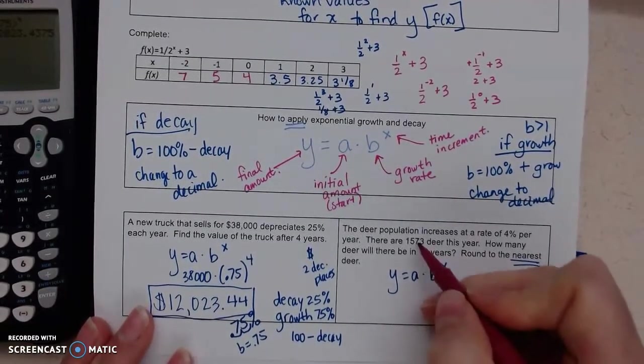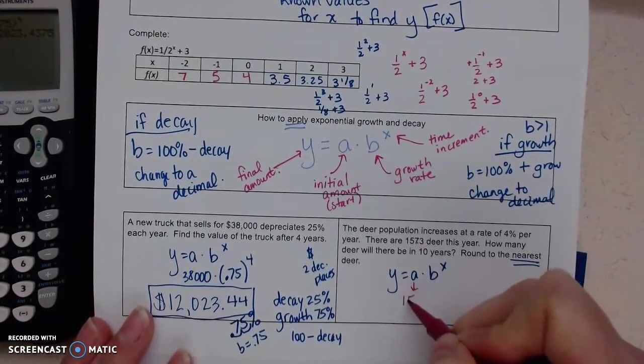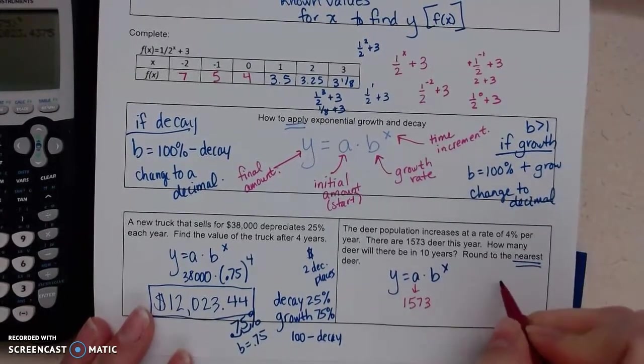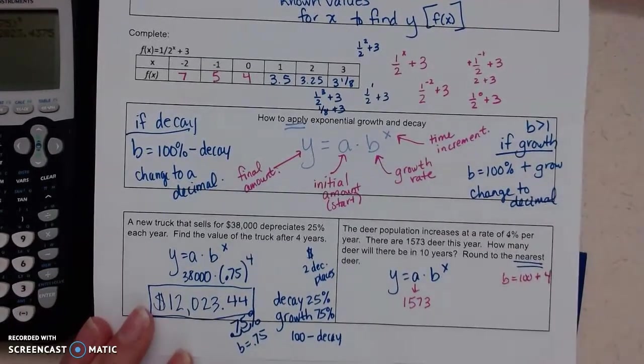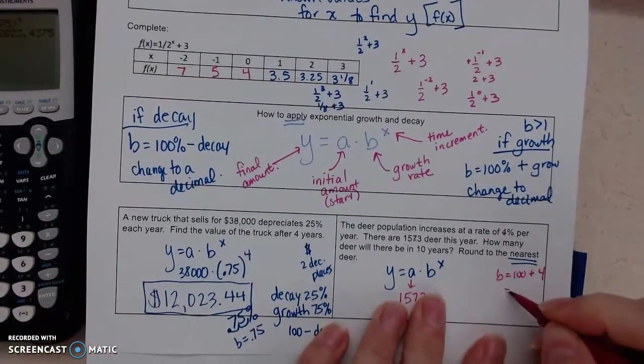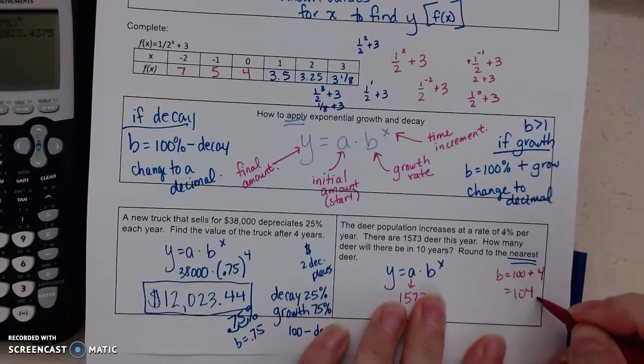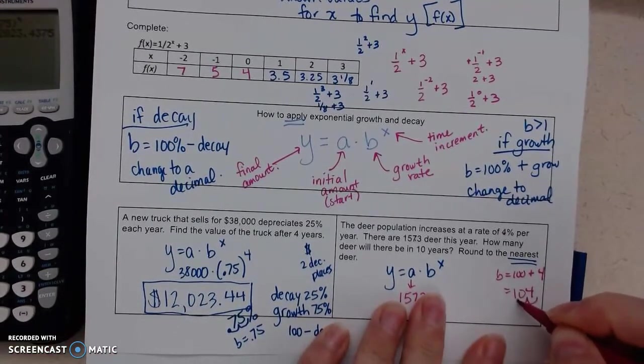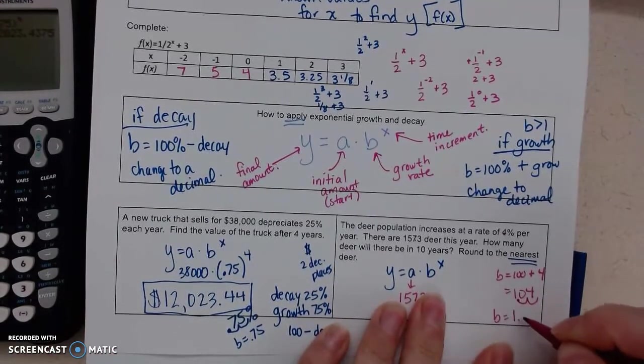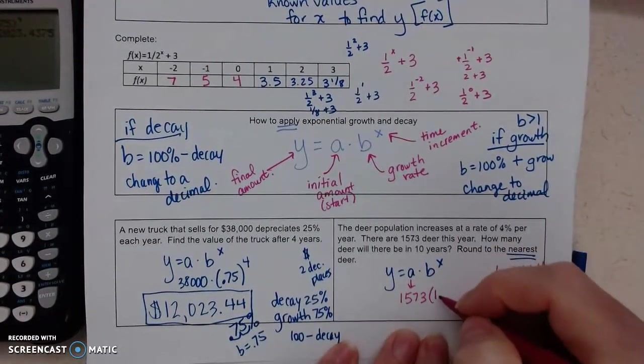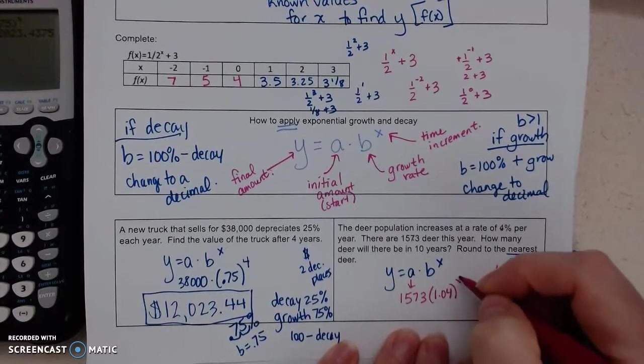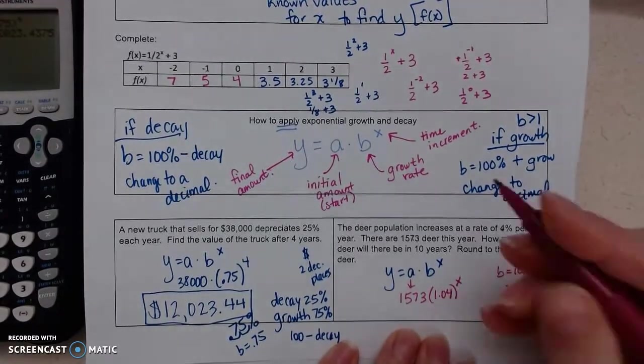So here we've got y equals a times b to the x. We are going to start out with 1573. And then our base, we've got 100 plus the 4, because that's what we're growing, which is 104. If I move that 2 to the left or divide by 100, that means that our base is 1.04. And notice our base is bigger than one, so we know we're going to grow.